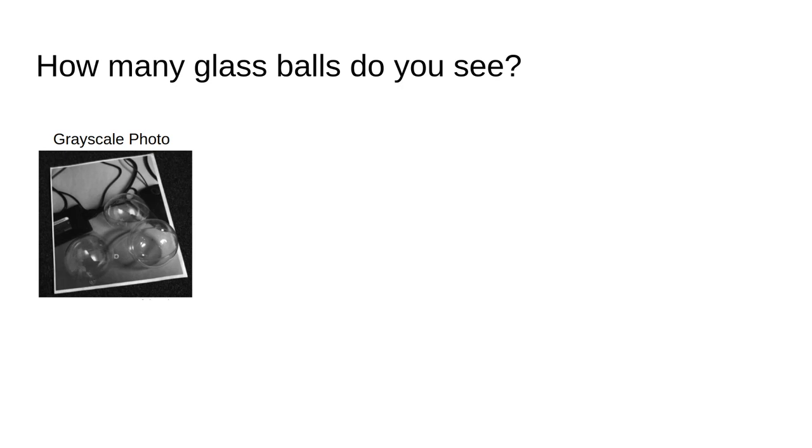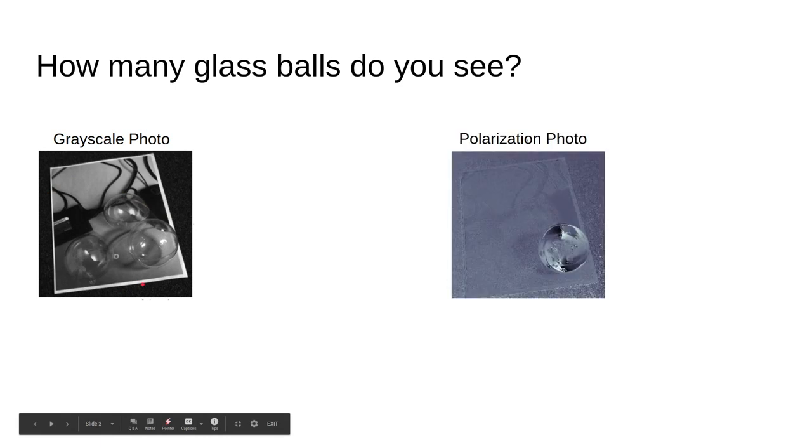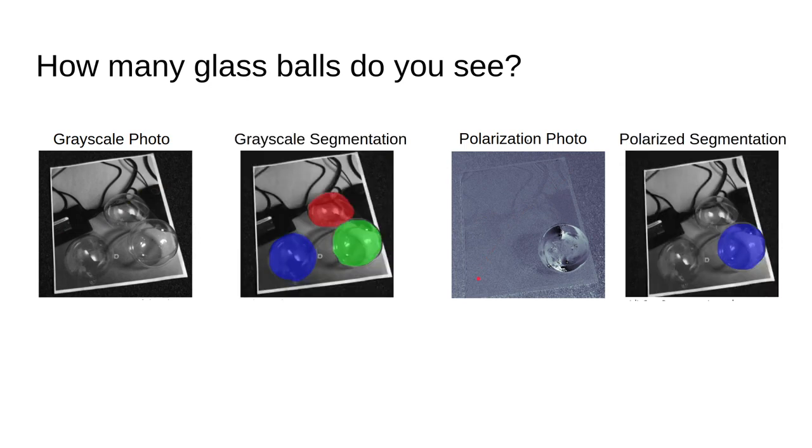So let's start with a seemingly simple question. How many glass balls do you see in the image on the left? Okay, how many do you see on the image on the right? See, what I just did is I tricked you using printouts, because on the left, two of these balls are actually just printed pieces of paper. And since the intensity of light isn't a geometric cue, you can't tell. But polarization of light is, and so you can actually tell that they're printouts and then isolate the correct object. We use that to build robust segmentation algorithms on the right.